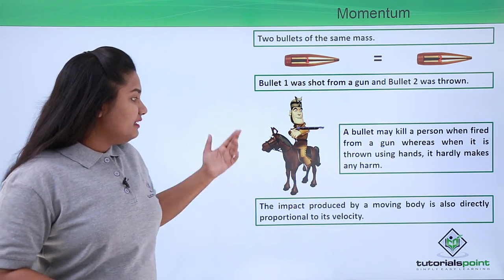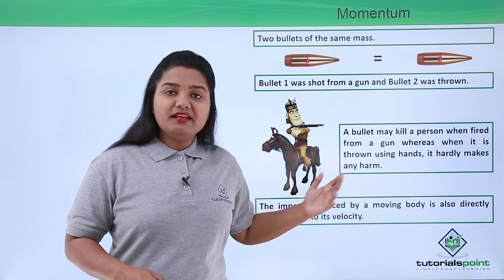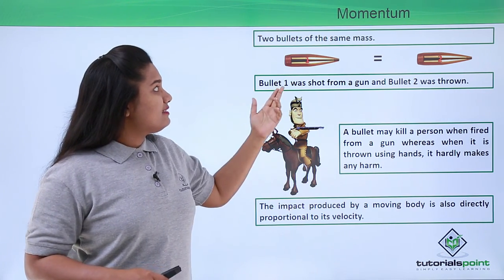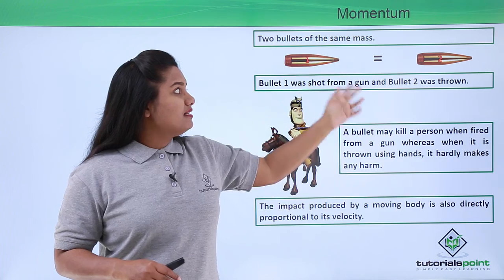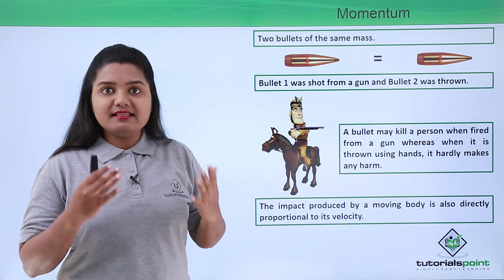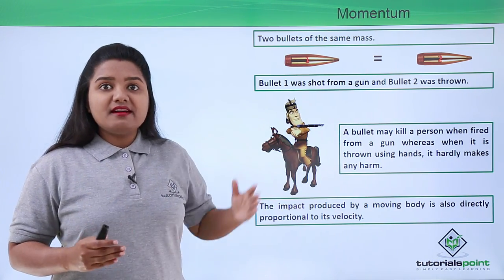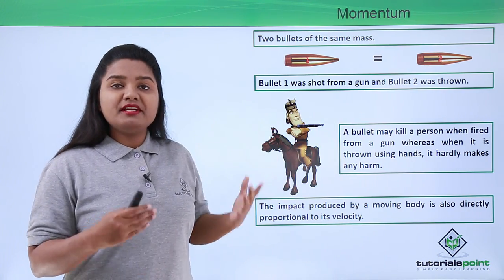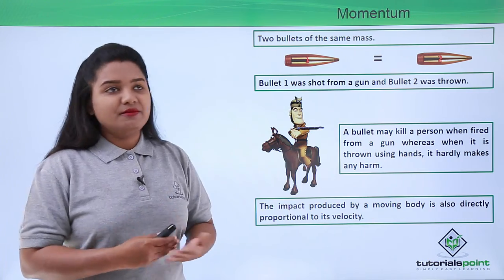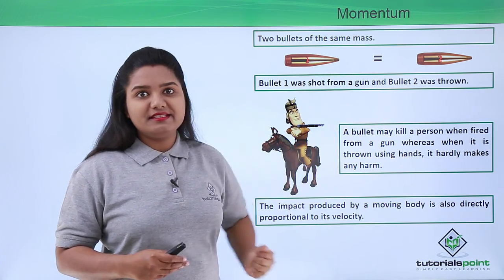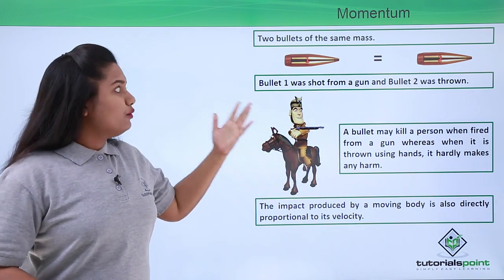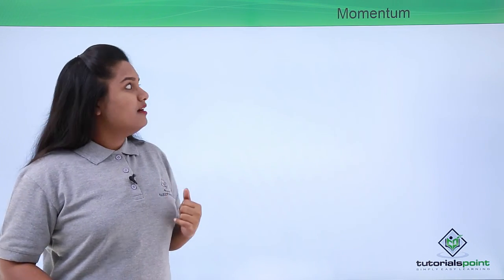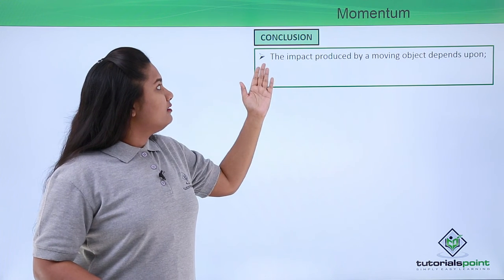We conclude that the impact produced by a moving body is directly proportional to its velocity. Since the masses of the two bullets are exactly the same, just because they are shot at different speeds we see a totally different impact with these two bullets.